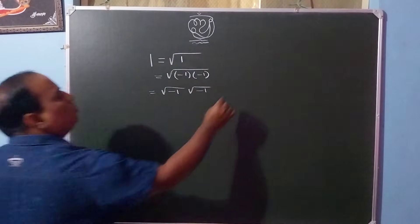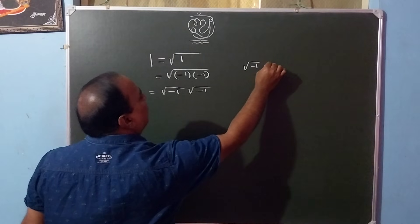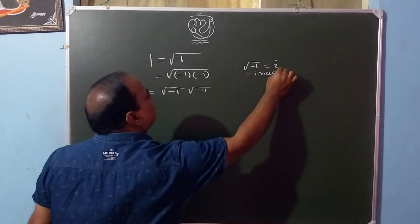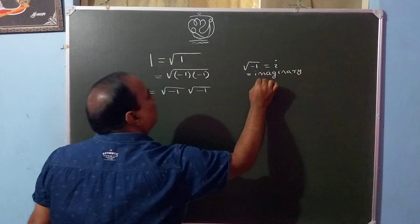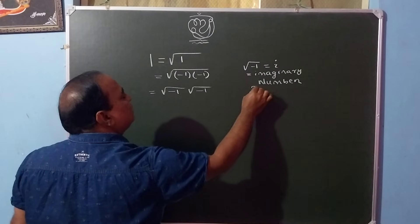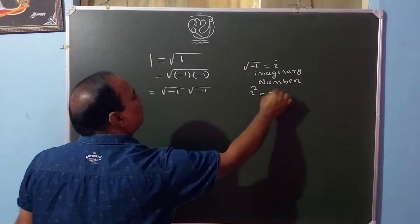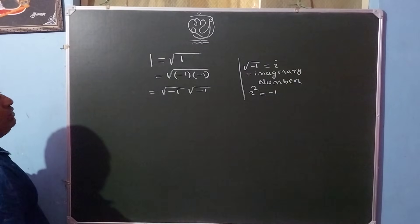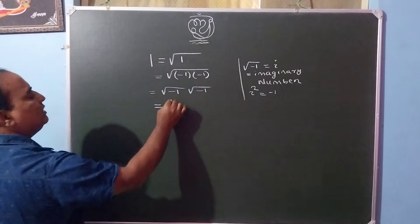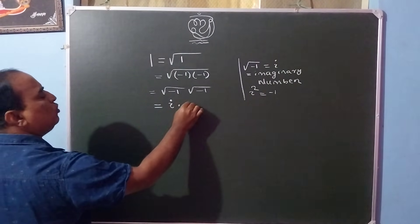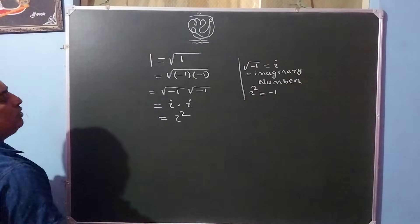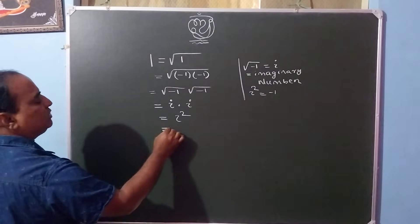We know that root over of minus 1 is equal to i — i means imaginary number. i square is equal to minus 1. So square root of minus 1 is i, and square root of minus 1 is also i. i into i is i square, and the value of i square is equal to minus 1.